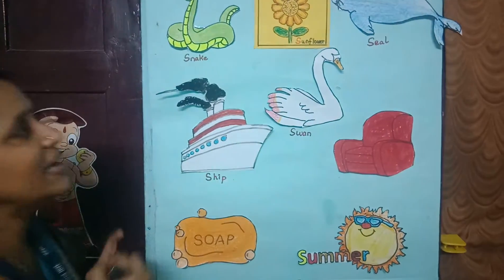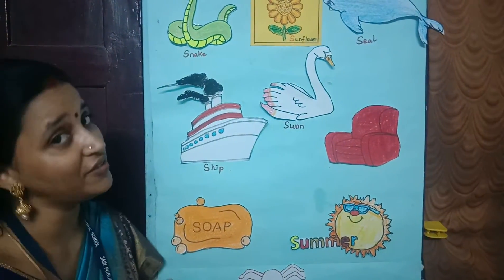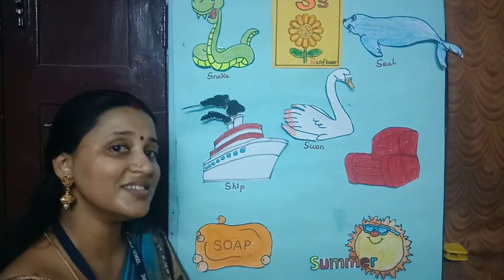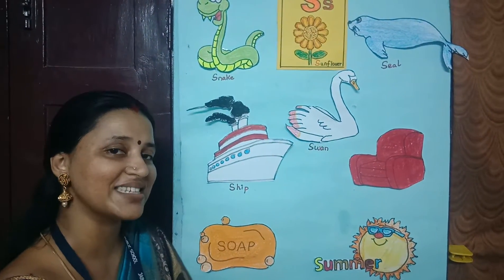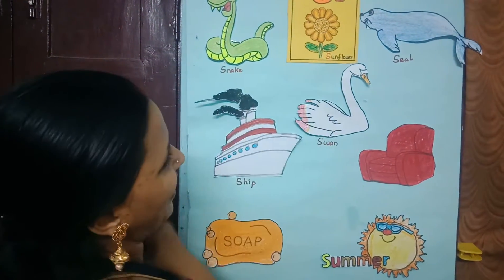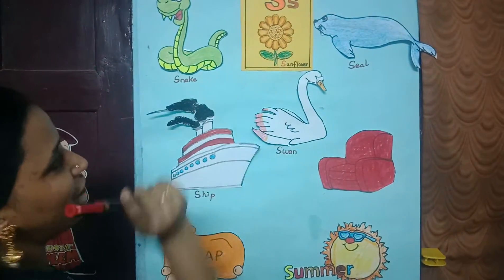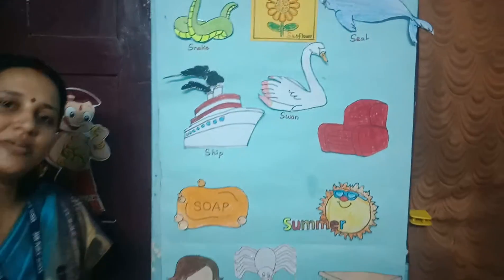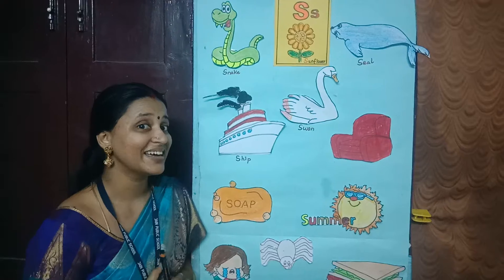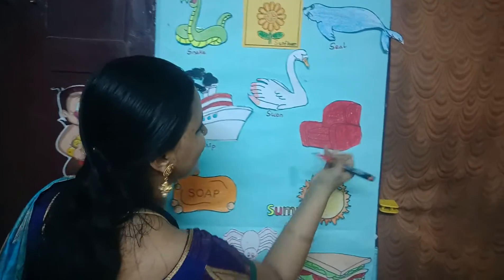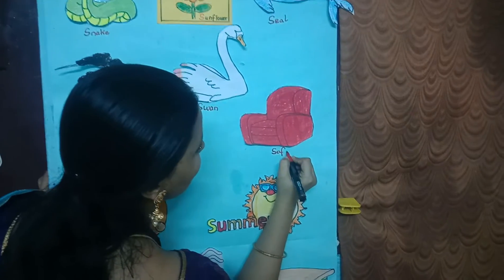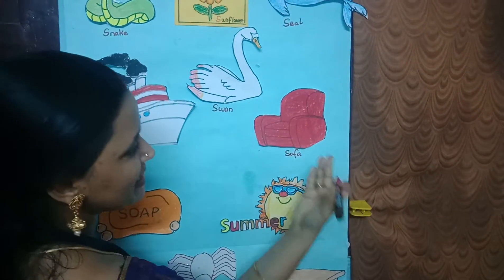Now tell me, what is the flower we have learnt before, some months before, that starts with the letter S? Correct, that is sunflower. S as in sunflower. When some guests are coming to our home, where do they sit? You are right, that is sofa. You have a picture of the red color sofa. S as in sofa.